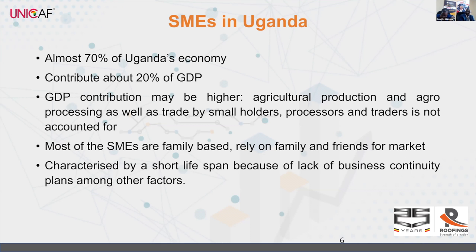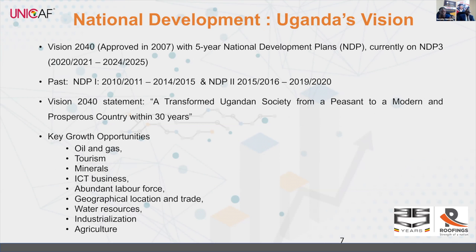SMEs in Uganda typically start as family-based businesses, then transit to bringing in friends and partners. If they progress further, they can access external financing beyond family and friends. One characteristic is that most of them live a very short life — they used to rarely go beyond their first anniversary — but over time they are proceeding to second and third years, depending on how they persevere through challenges.